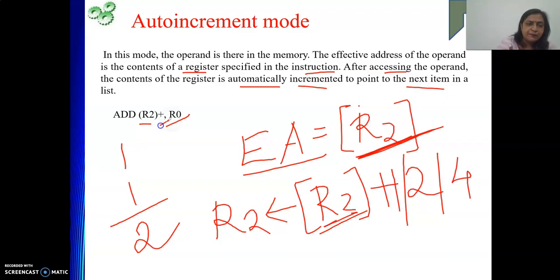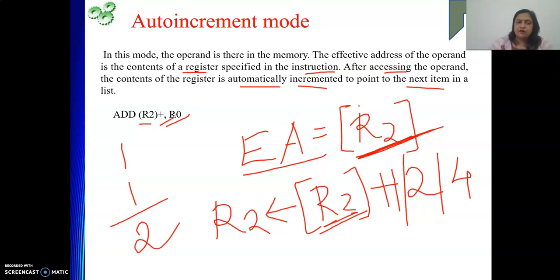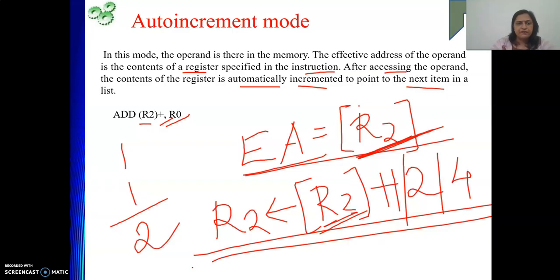So we write the plus sign after the register. Please understand — after taking the content of the register, we are going to update it. So your effective address will be the content of the register only, but as part of execution, R2 will also be modified. The increment amount may be one, two, or four, depending on the length of the element R2 is pointing to.